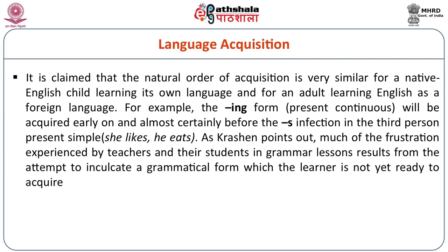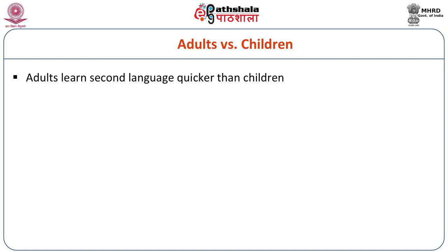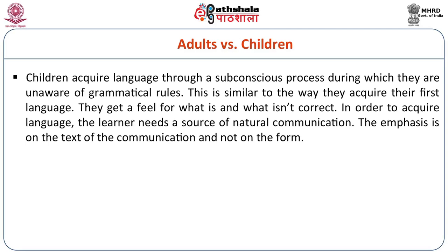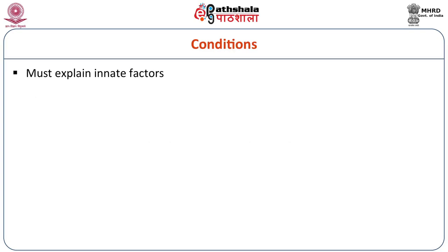As Krashen points out, much of the frustration experienced by teachers and students in grammar lessons results from the attempt to inculcate a grammatical form which the learner is not yet ready to acquire. Adults may learn a second language quicker than children in some respects, but the popular view is that children have the advantage, with substantial research support. Children's fertile and flexible brains possess a unique capacity for language that adults no longer have. Children acquire language through a subconscious process, unaware of grammatical rules, with emphasis on the content of communication rather than the form.